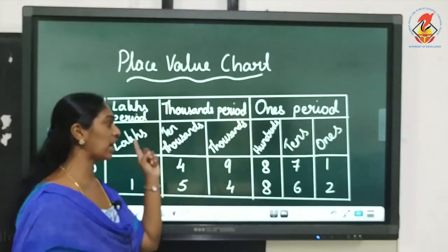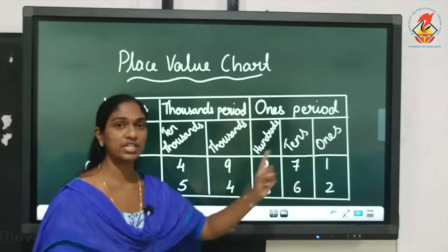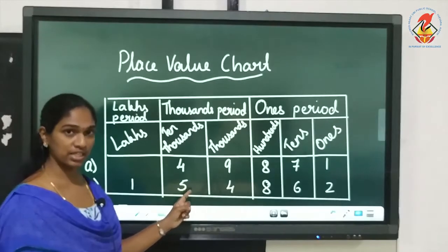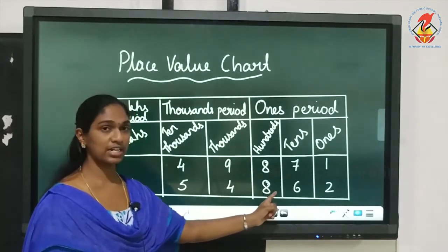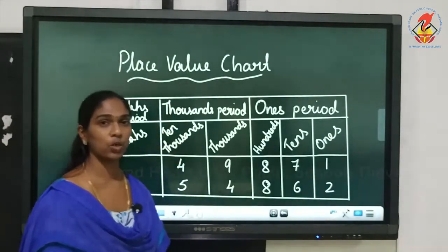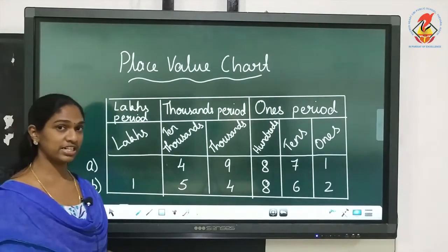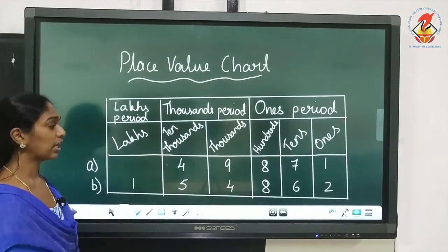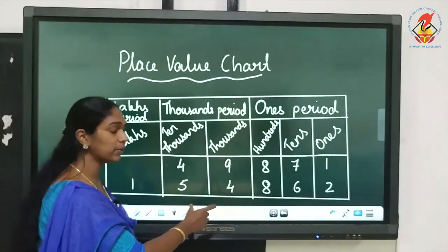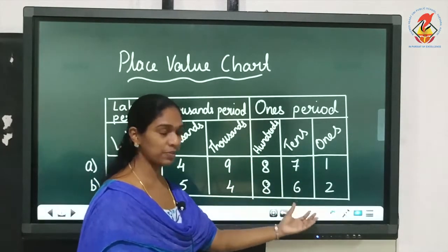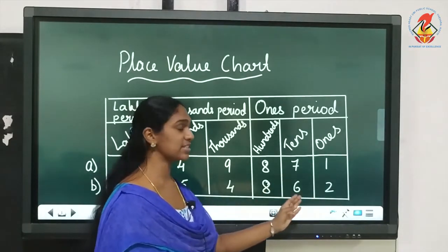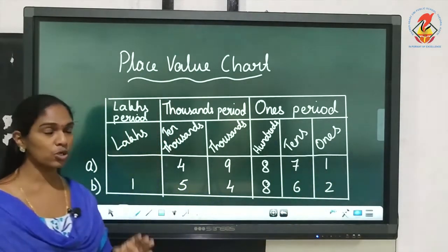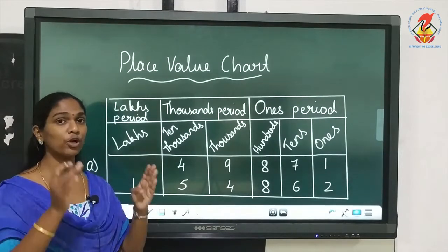The second number is a 6 digit number: 5 under the ten thousands place, 4 under the thousands place, 8 under the hundreds place, 6 under the tens place, and 2 under the ones place, plus 1 in the lakhs place. First take the lakhs period — it is 1 lakh. Then the thousands period: take the 2 numbers together, you have 54,000. Then the ones period: take the 3 numbers together, 862. So you read the number as 1 lakh 54,862.